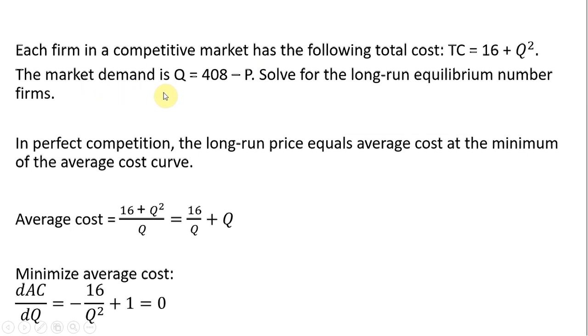The market demand, the overall market demand, is Q equals 408 minus P. We want to solve for the long-run equilibrium number of firms.